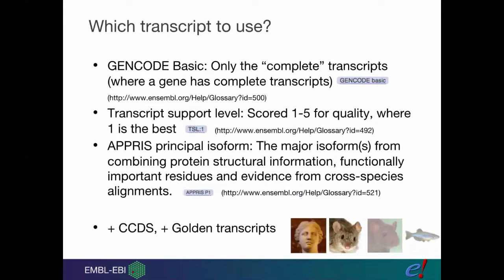If you only want complete things, then you can use GENCODE basic. We also have Transcript Support Level, which is a score between one and five for coding, where one is the best. We have the APPRIS Principal Isoform. A group combined together data like protein structural information, functionally important residues, and evidence from cross-species alignment. They give things labels like Principal 1, Alternative 1. If you combine these with CCDS and golden transcripts, you can usually get down to one or two transcripts per gene.